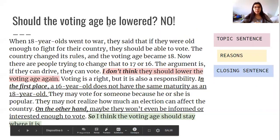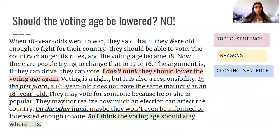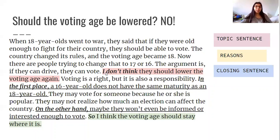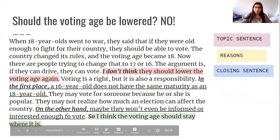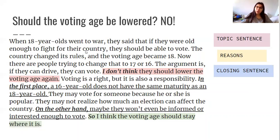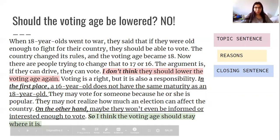Acá tenemos otro ejemplo que habla de la edad para votar, y que está en desacuerdo con bajarla. La topic sentence está en lila, y de nuevo está con "I don't think" — en este caso: "I don't think they should lower the voting age again." De nuevo deja claro en la topic sentence la postura y el tema. Todo lo anterior es como una introducción al tema, así que no es siempre la primera oración — tienen que buscar dónde está la opinión. Después de nuevo subrayadas están las razones: "in the first place" and "on the other hand." Y después con celeste de nuevo está: "So I think the voting age should stay where it is" — un resumen corto que vuelve a decir la idea principal para cerrar.